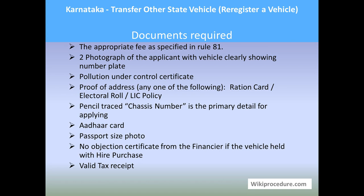Proof of address — any one of the following: ration card, election roll, electoral roll, or LIC policy. A pencil trace of the chassis number is a primary detail for applying. Aadhaar card, passport, or photo ID may also be needed. If the vehicle is held under hire purchase, a no-objection certificate from the financier is required, along with a valid tax receipt or the vehicle's documentary record.